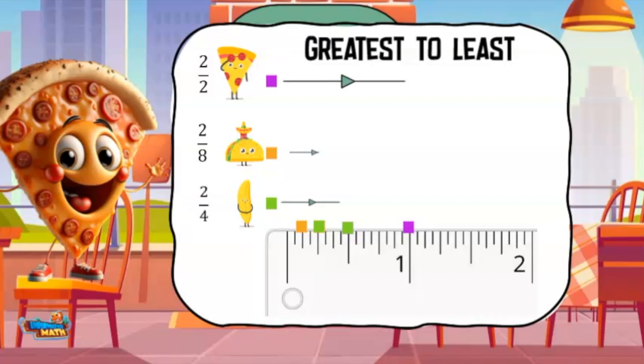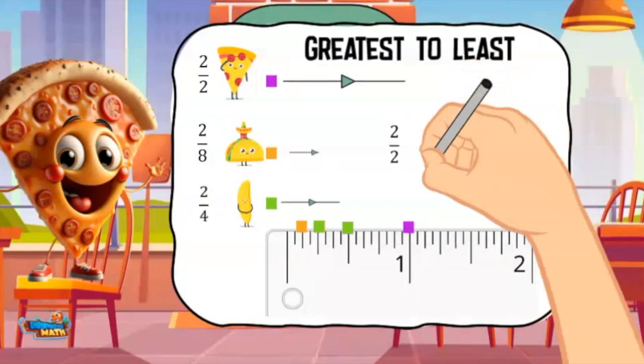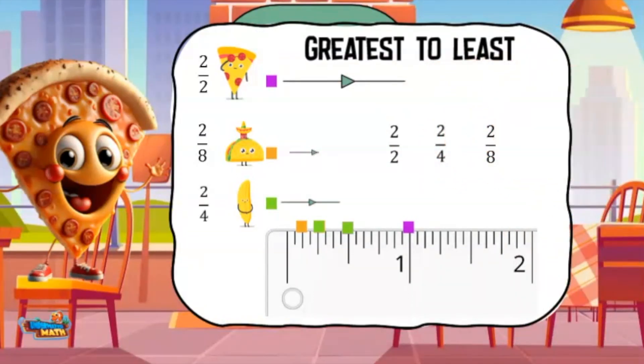We are going to put these fractions in order from greatest to least, or biggest to smallest. 2/2 is the largest, followed by 2/4, and ending with 2/8.